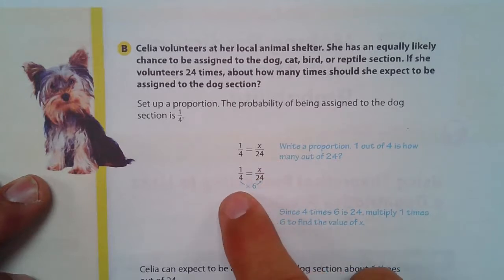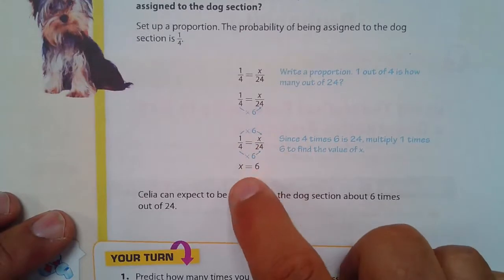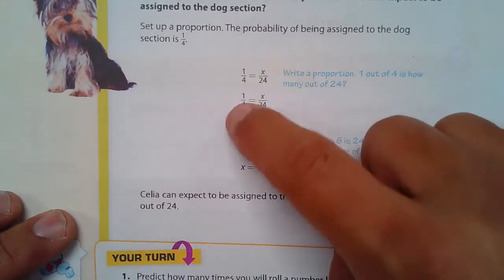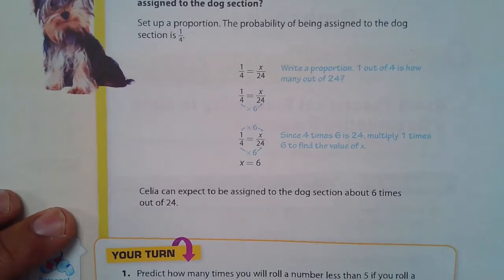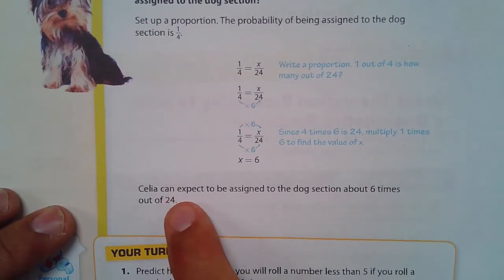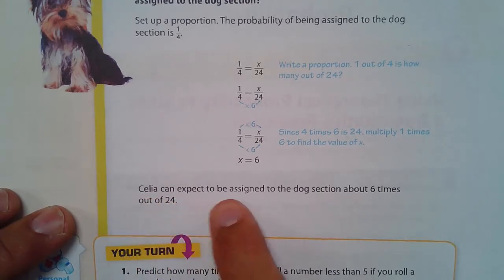And we would see that four times six is 24. So you multiply one times six and you get six. And you could solve proportions by cross multiplying and dividing as well, as I showed you earlier. So Cecilia can expect to be assigned to the dog section about six times out of 24.